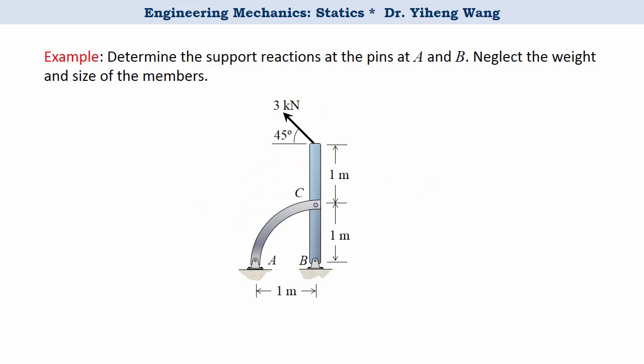Let's look at this example. We need to find the support reactions at pins A and B. If we want to treat this assembly as one system and draw only one free body diagram, then since we know that there are two force reactions associated with each pin support, together we will have four unknowns, but we can only write three independent equations, and that won't be enough to solve for all unknowns. But we can solve this problem by analyzing each member separately.